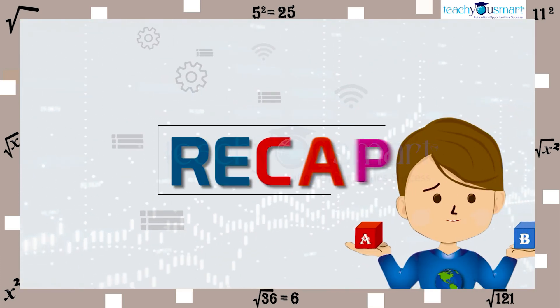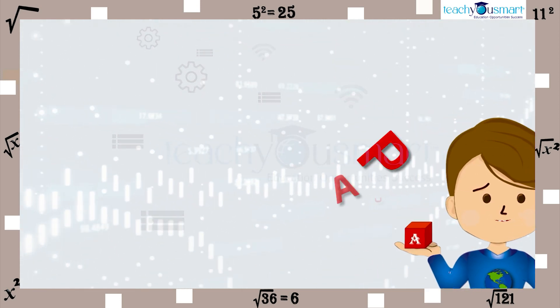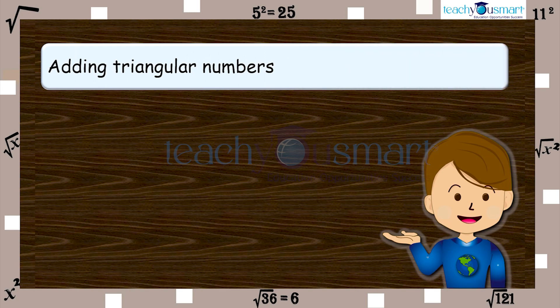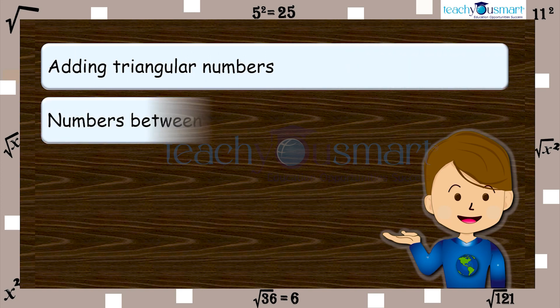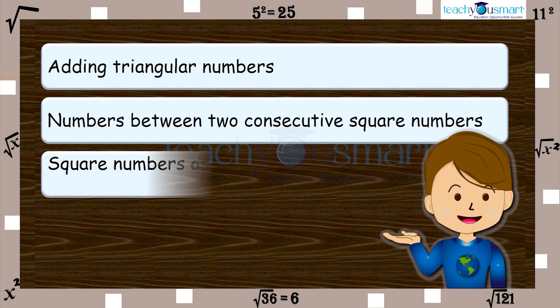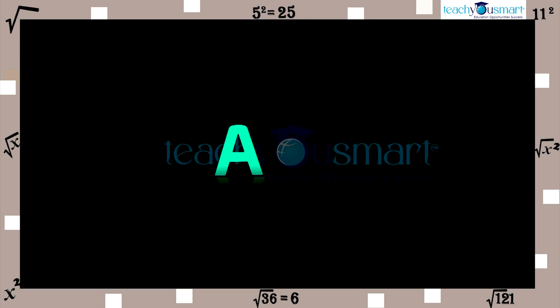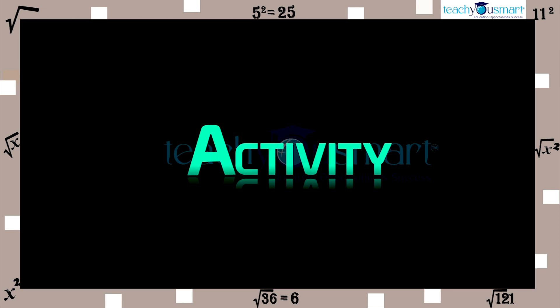Let's recall what we learned. We have discussed some interesting patterns: adding triangular numbers, numbers between two consecutive square numbers, square numbers as the sum of consecutive odd numbers. Before winding up, let's check how much you understood by doing an activity.